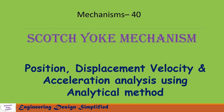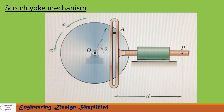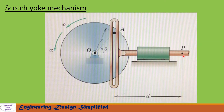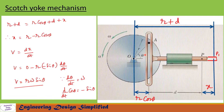In this picture shown is a typical Scotch yoke mechanism. Crank length is r, and the distance between point P on this slider and the center line of this slot is d. The crank rotates with an angular velocity omega and angular acceleration alpha. Let us see in the coming slides how to derive equations to find position of P, velocity of P, and acceleration of point P on this slider.